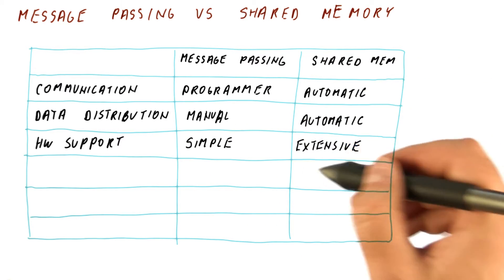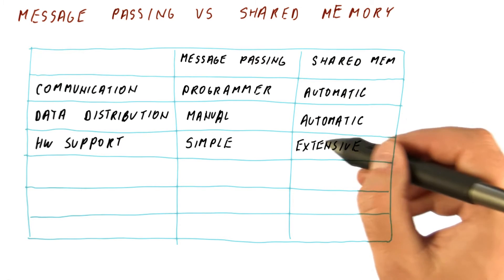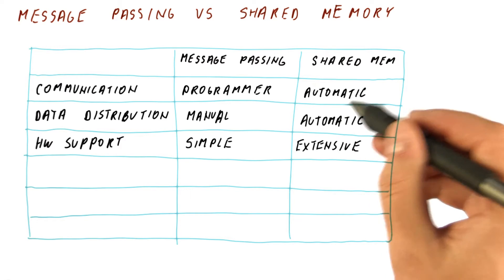In contrast, for shared memory, we need extensive hardware support that automatically figures out when to send data and to whom and where to cache it.